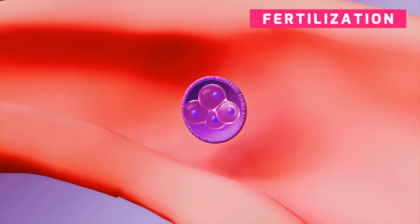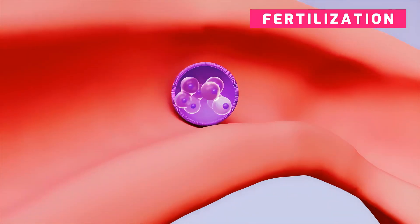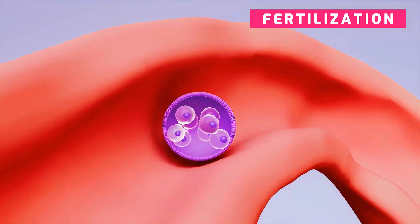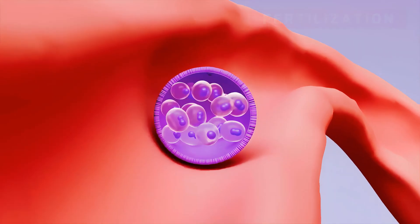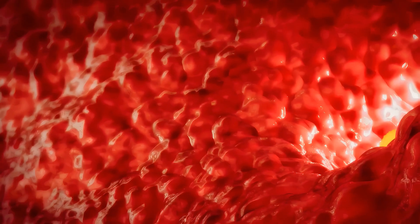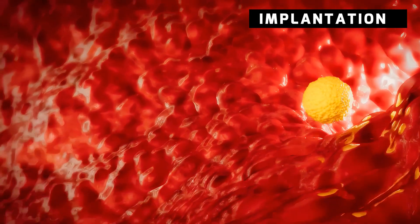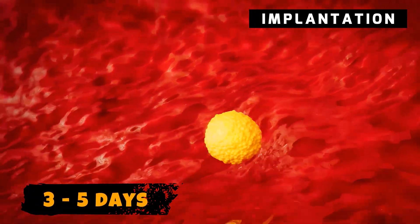After fertilization in the fallopian tube, the zygote moves through the tube toward the uterus. The zygote enters the uterus in 3-5 days.